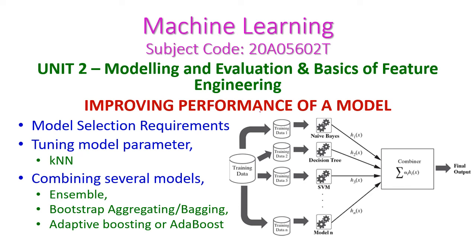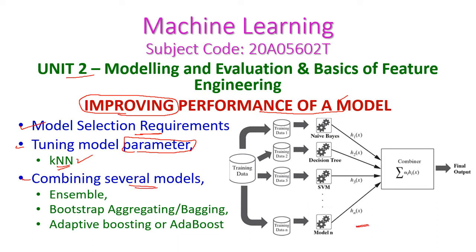In this machine learning class we will see improving performance of your model. This comes under the second unit. We will cover model selection requirements, tuning the model parameters using the K nearest neighbor algorithm as an example, and combining several models. For combining models we will look at the ensemble method, bootstrap aggregation (bagging), and adaptive boosting, also called AdaBoost.